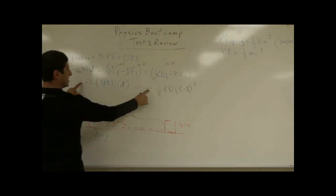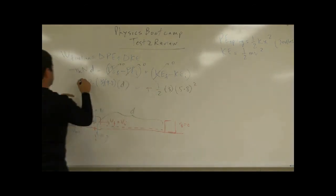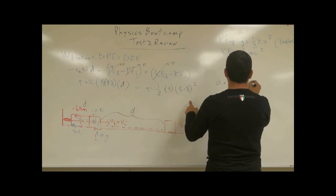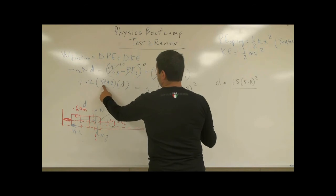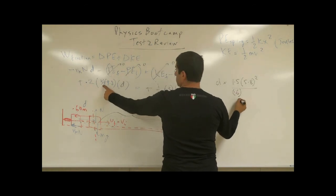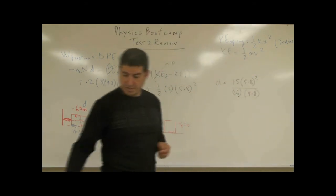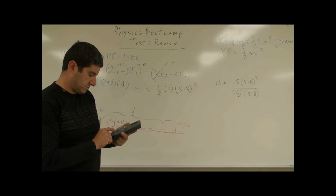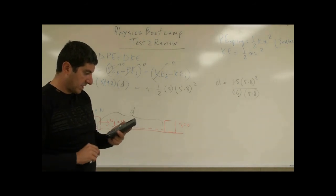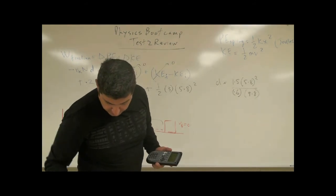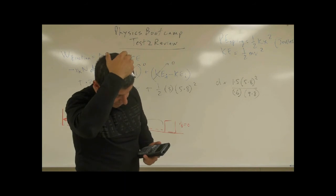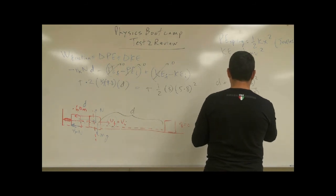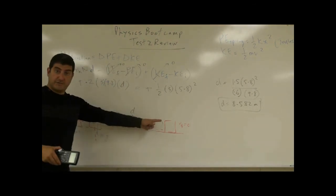The two negatives cancel, and solving for D: D equals 1.5 times 5.8 squared divided by (0.2 times 3 times 9.8), which gives 8.582. So the distance is 8.582 meters. That's quite a distance before the block finally succumbs to friction and stops.